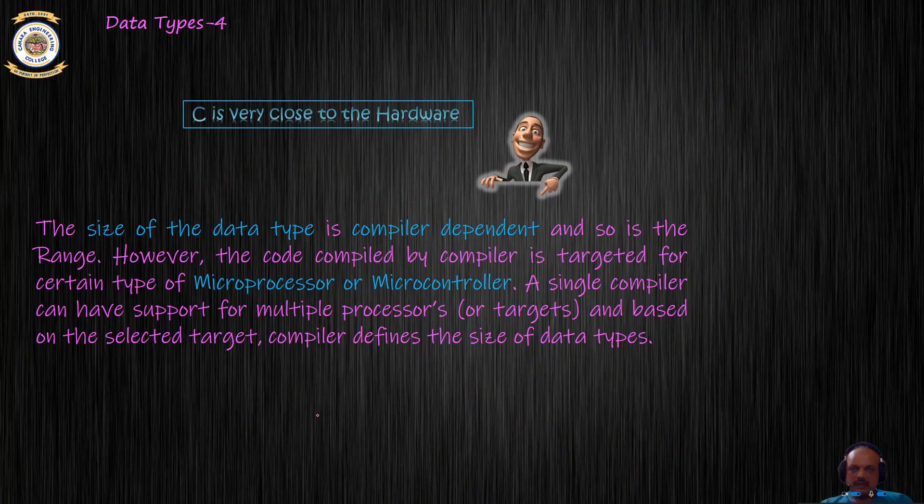Having said this, make a note that C is very close to the hardware and the size of bytes allotted for the data type is compiler dependent. So basically, if you are compiling a code for a 32-bit machine, a different size of data might be available for an integer compared to when you are compiling it for a 16-bit machine. So if you are using C code and targeting it for a 16-bit microprocessor or microcontroller, the size allotted for say int might not be four but two bytes.